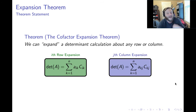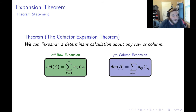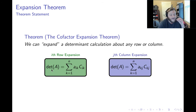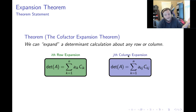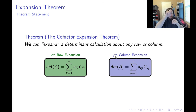You can choose any row or any column to expand your determinant calculation. The i-th row expansion says: choose row i, pluck out its entries, and multiply each by the corresponding cofactor. The j-th column expansion says the same thing but with columns — choose your favorite column, pluck those entries out, multiply each by the corresponding cofactor, and add everything up to get your determinant.